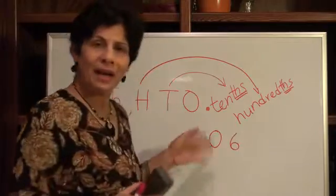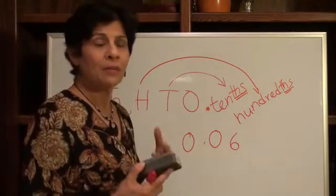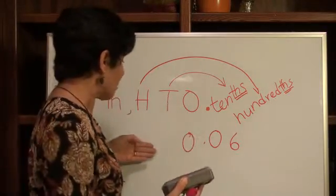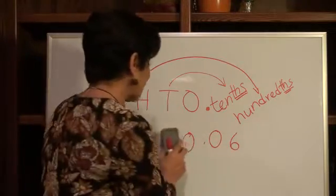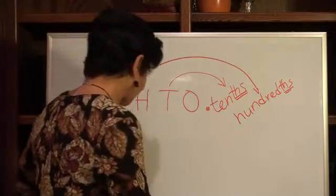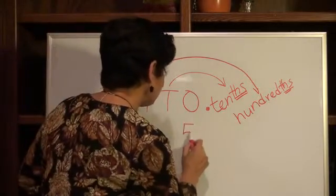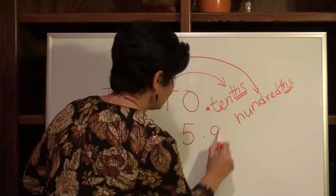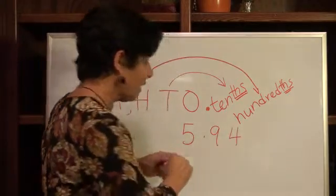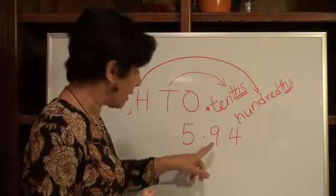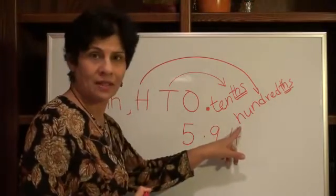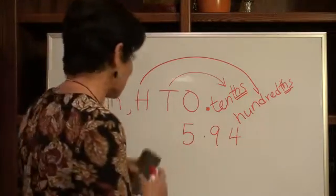And you know what? You have done this in money. If you look at money, it's all the dollars come on this side, the cents come on this side. So you are used to reading numbers like that. Let's say if it was [5.94]. How would you read this number? That would be 5 and 94 hundredths. That's as easy as that.